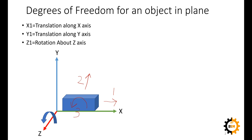We can remove all 3 degrees of freedom if we take glue and attach this duster permanently to the whiteboard. In this way, it cannot move along the x-axis, it cannot move along the y-axis, and it cannot rotate. This means we have grounded this duster to the whiteboard. All degrees of freedom of this duster are removed and it now has 0 degrees of freedom.